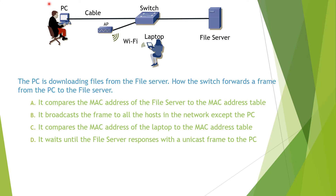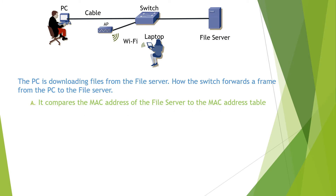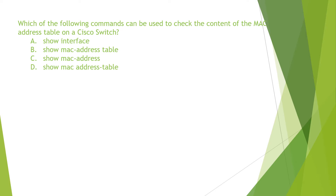The question reads: a PC is downloading files from the file server — how does the switch forward a frame from the PC to the file server? Since the PC is downloading files, the switch has already built the MAC addresses of both devices in its MAC address table. Therefore, the switch compares the destination MAC address (the file server's MAC) to its MAC address table and follows the instruction to forward the frame. The answer is A. You can find the detailed explanation in the video 'Frame Forwarding Process in Cisco Switch.'